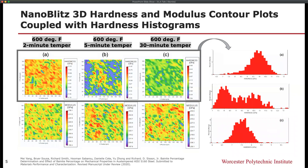While the Rietveld refinement and some of the XRD-based analysis are promising measures and provide interesting insights, nanomechanical mapping can achieve the same with high throughput and more statistically significant data, depending on if you are interested in characterizing multiple runs under the same processing conditions.